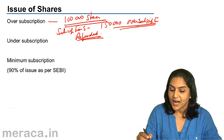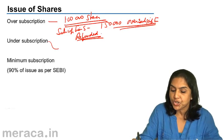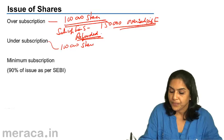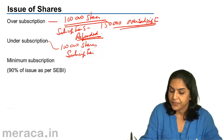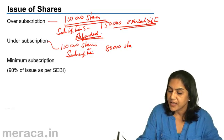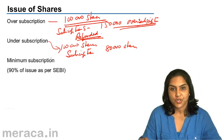What is under-subscription? If in an issue of 1 lakh shares the amount of subscription is lower — say it is only 80,000 shares — then it is a case of under-subscription.